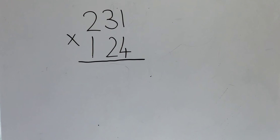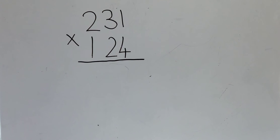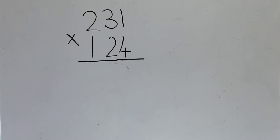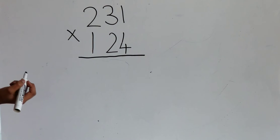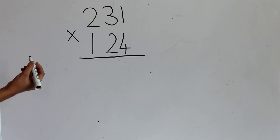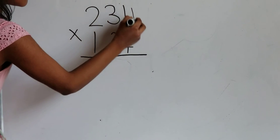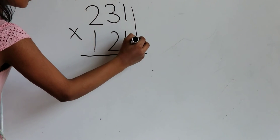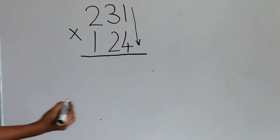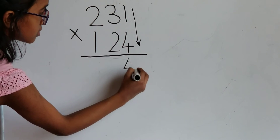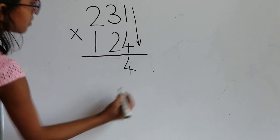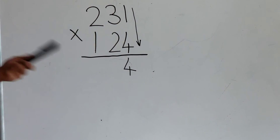Let's multiply a three digit number with a carry. Let's use 231 times 124 as an example. First, let's vertically multiply 1 times 4. 1 times 4 is 4. Write 4 over here.